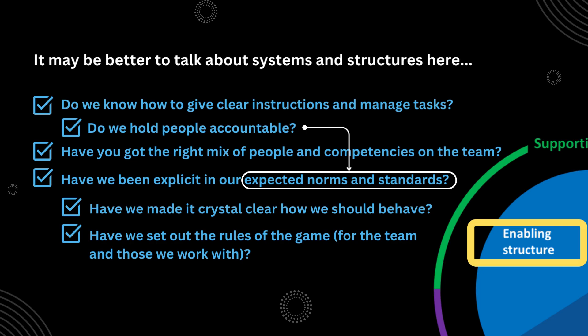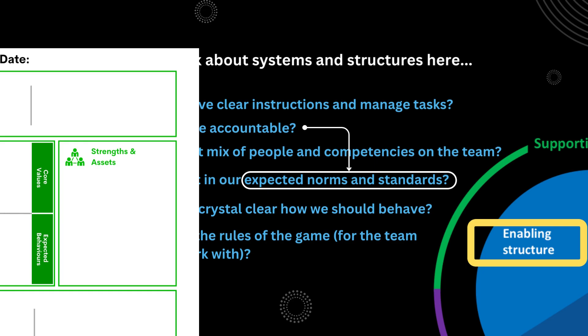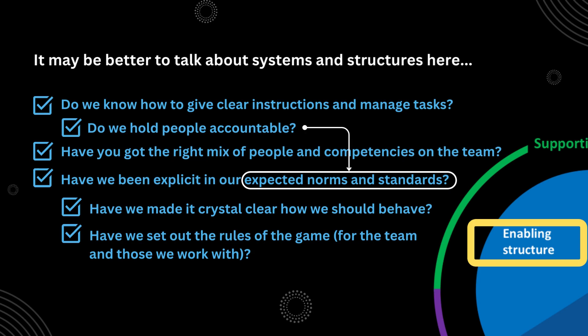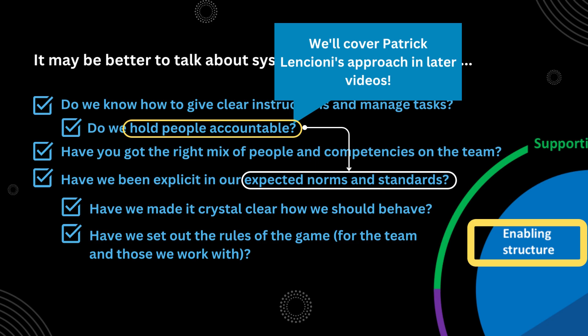Very often when we get pulled into team dysfunctions, our core job is to fix the behavior of team members. That often requires a team charter so that people know what is expected of them from a behavioral perspective, and then enforcement of that charter. The team leader — but also team members — need to hold people to account, which is quite difficult to do. When we look at Patrick Lencioni's framework, we'll see how accountability relies on things like trust and other aspects of the team being in place.